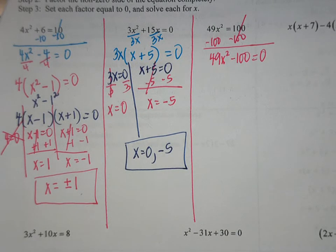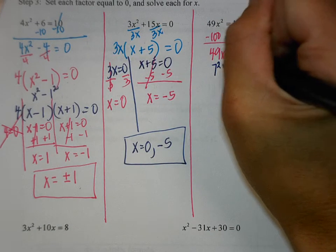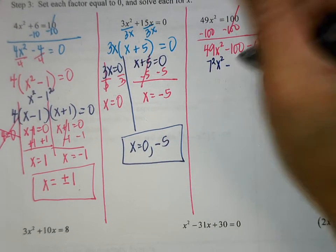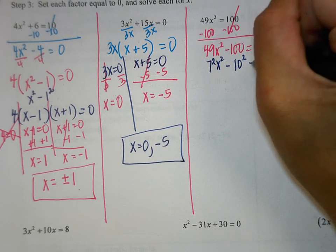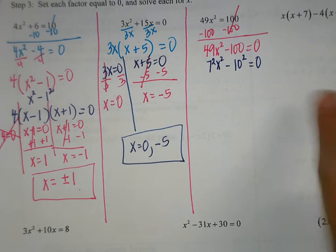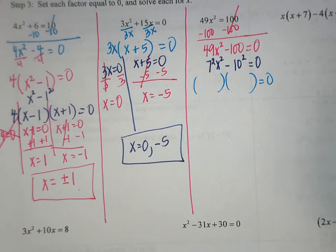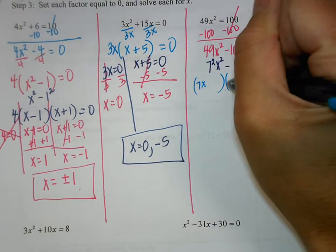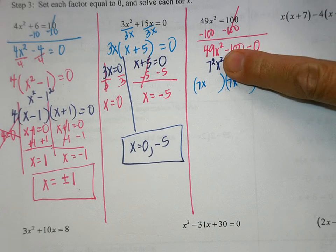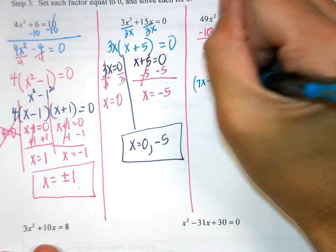Is there a GCF? No. There are only two terms — can these all be written as squares? Yes. 49 is 7 squared, x squared, minus, and 100 is 10 squared. So now we're going to split these into our two parentheses. 7x goes at the front of both of them, because we have 7 squared and x squared. And then what goes at the end? Minus 10 and plus 10 — a minus 10 and a plus 10.